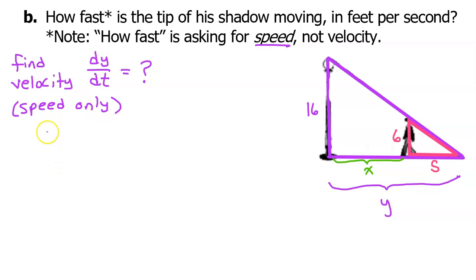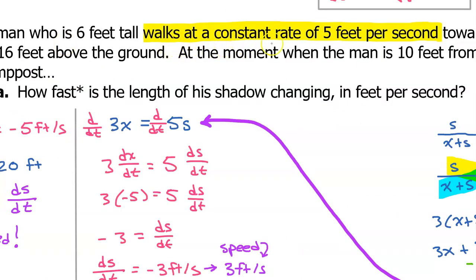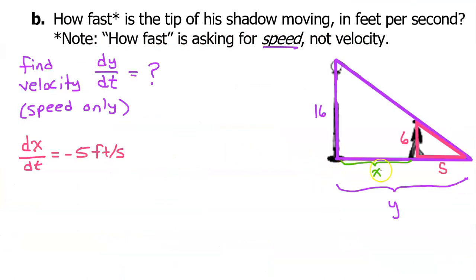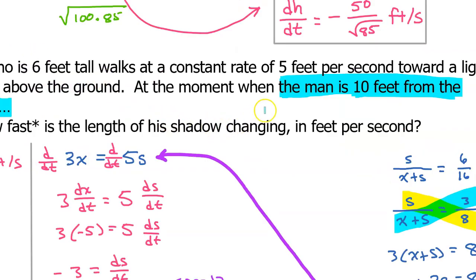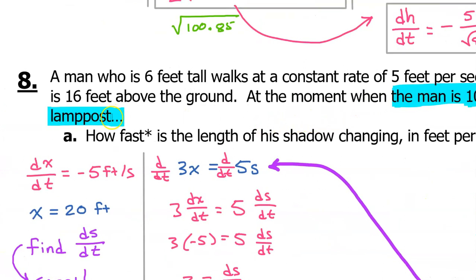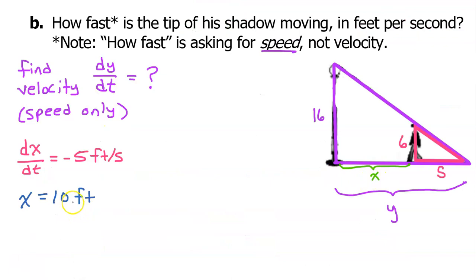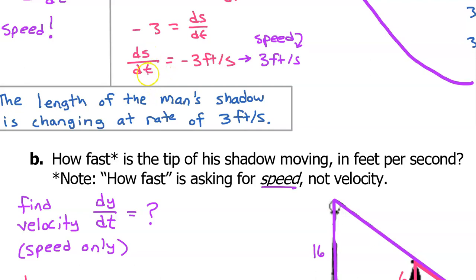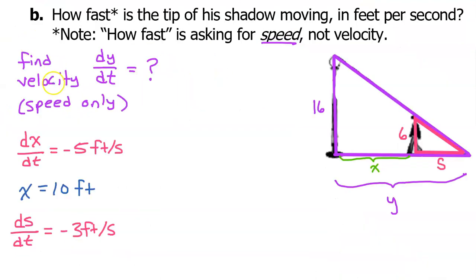Let's make an inventory of any quantities that we've been given or quantities that we found in part A. For example, in the setup we were told that the man walks at a constant rate of 5 feet per second. That told us that dx/dt was negative 5 feet per second. It was negative because x is decreasing. We were also told that the man is 10 feet from the lamp post at the moment in question. That means x is 10 feet. Also, at the end of part A, we calculated that ds/dt was negative 3 feet per second. Look at the variables that we have in this inventory. We need to find a relationship between y, x, and s. This will be pretty straightforward because we can see right away that y is simply x plus s. And that's it. That's the relationship. y is equal to x plus s.